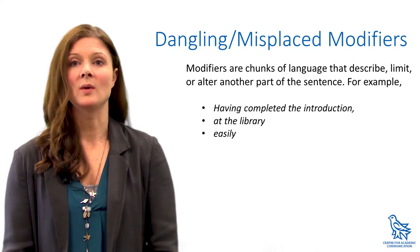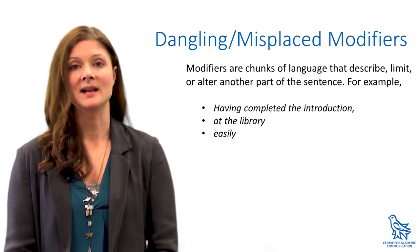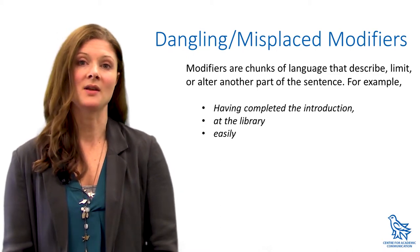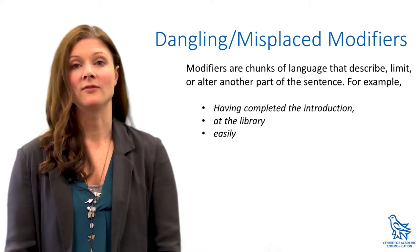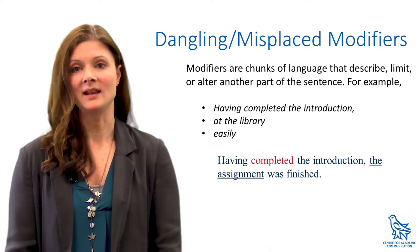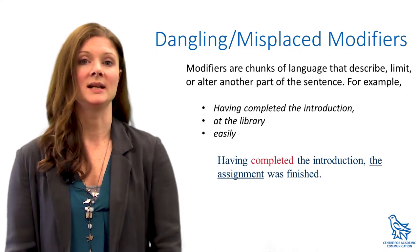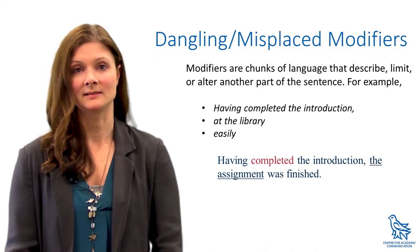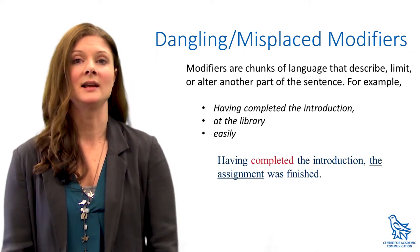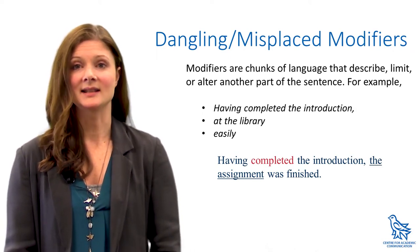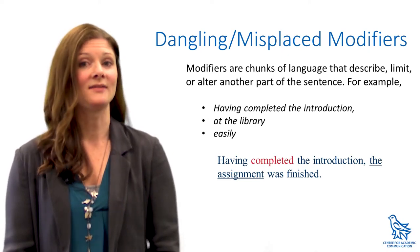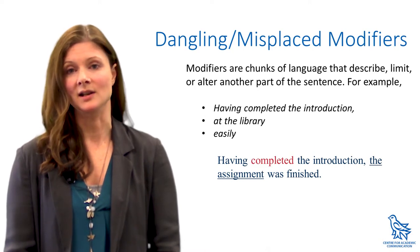Finally, be careful to avoid what are referred to as dangling or misplaced modifiers. Modifiers are chunks of language that describe, limit, or alter another part of the sentence. They can be phrases or a single word. In the sample sentence, "having completed the introduction, the assignment was finished" — who completed the introduction? The subject is missing from the sentence. The subject of the modifying phrase is always grammatically whatever comes right after the comma. In this case, the sentence would mean that the assignment completed the introduction. It'd be great if assignments completed themselves, but does this really make sense to you?